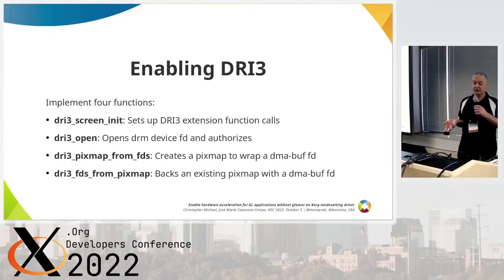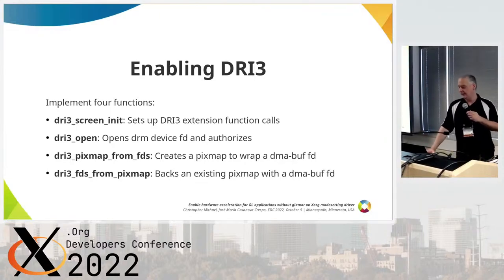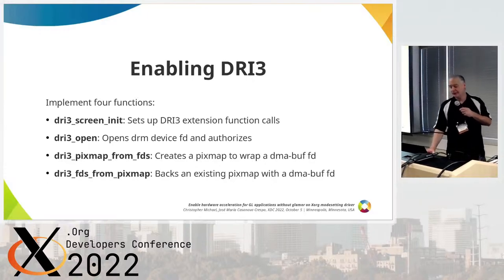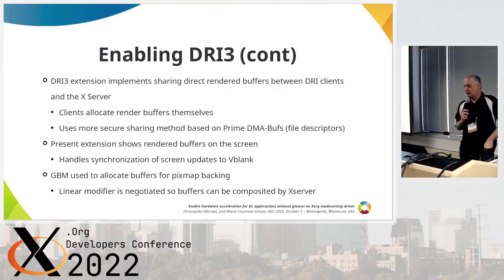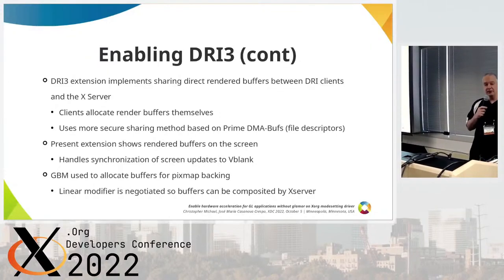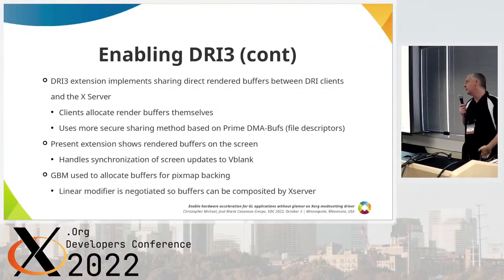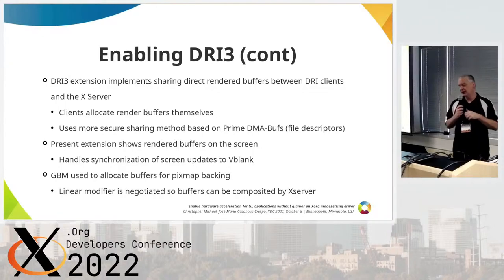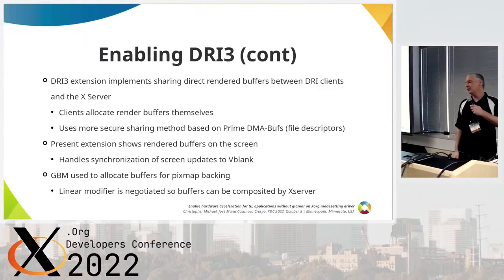There are a few more DRI3 functions — get modifiers, get drawable modifiers, get formats — they are required for our use case but not as technically involved. The DRI3 extension implements sharing of direct rendering buffers between clients and the server: the client allocates the buffer and it gets shared to the X server. This is an improvement over DRI2, using a more secure sharing method based on PRIME DMA buffers, which are essentially just file descriptors. The DRI3 implementation also uses the present extension, which displays rendered buffers onto the screen and handles synchronization with the vertical blank.